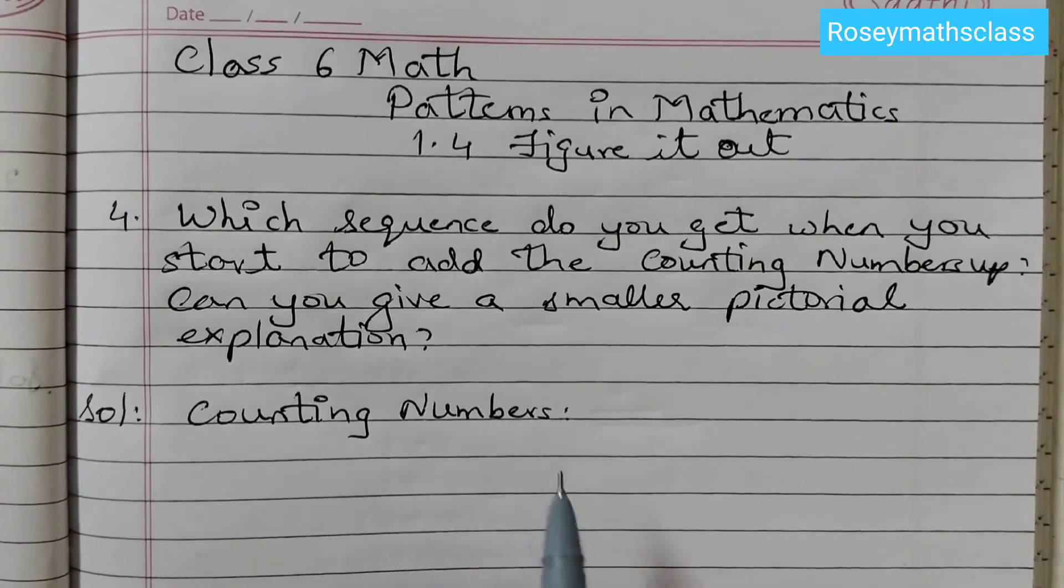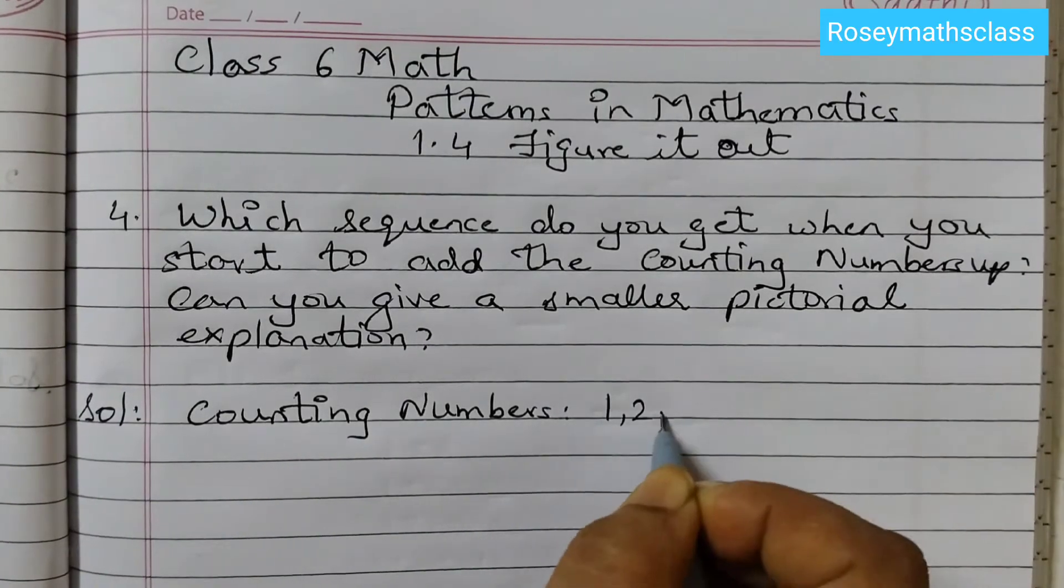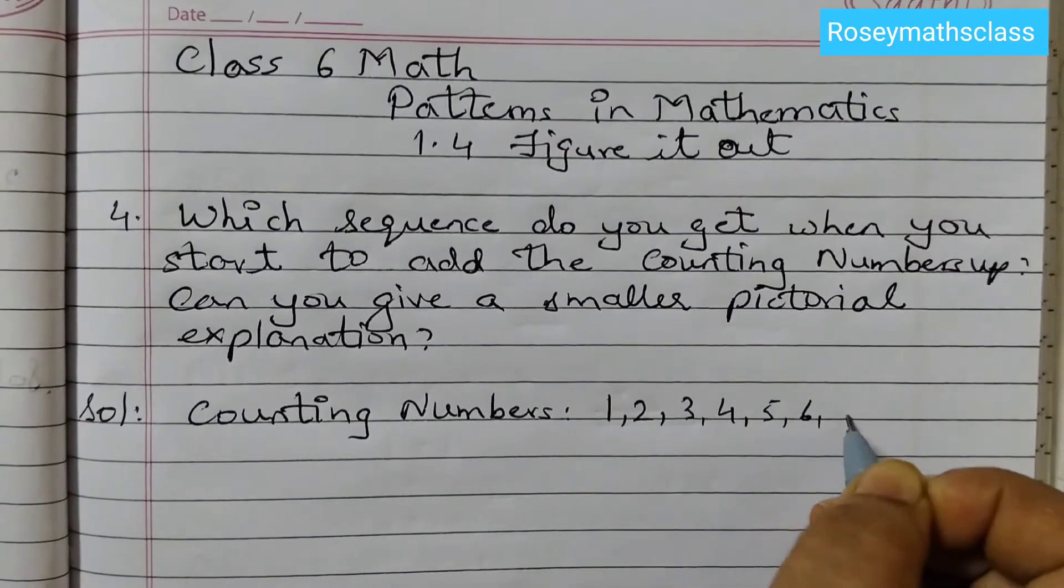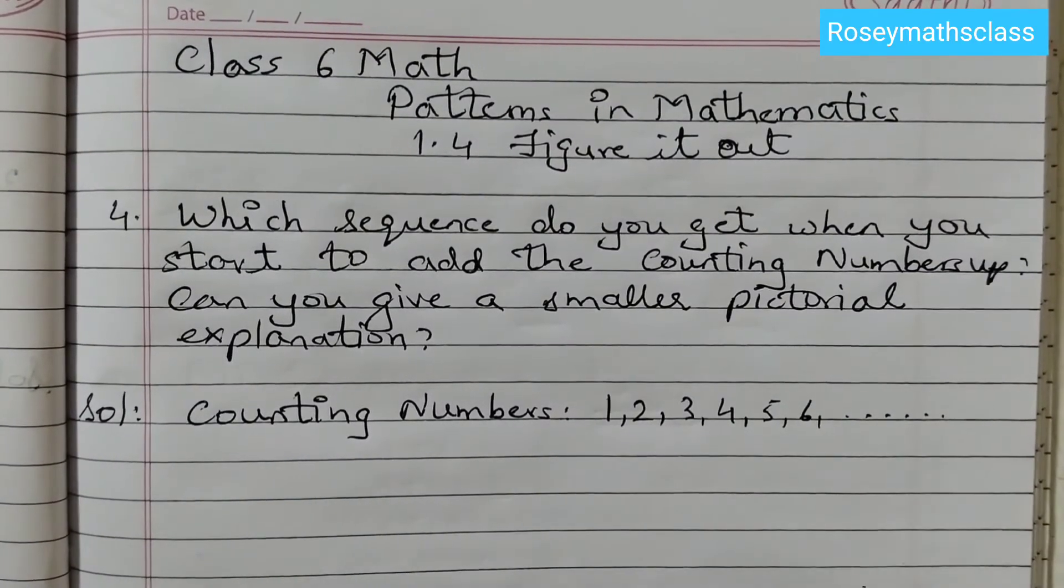So what are counting numbers? Numbers starting from 1: 1, 2, 3, 4, 5, 6 and so on. These are counting numbers.